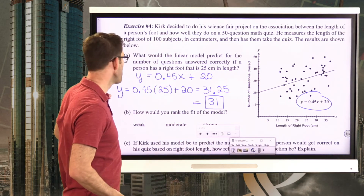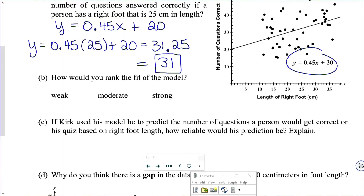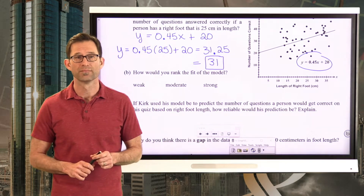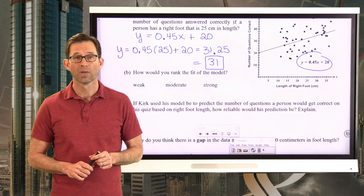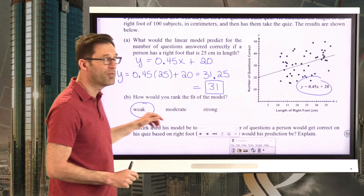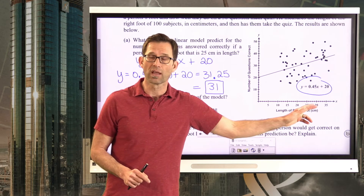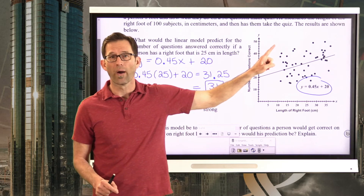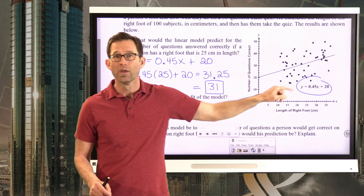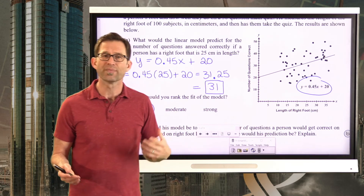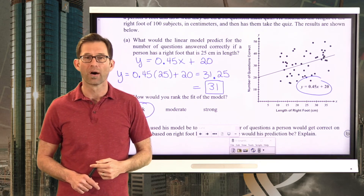Letter B: how would you rank the fit of the model — weak, moderate, or strong? I would go weak. There's definitely some kind of an association — generally as foot length gets longer, people do better on the quiz. But it is all over the place. Some people with small feet do quite well; others with large feet do poorly. So it's weak — certainly not strong, and I wouldn't even go moderate.